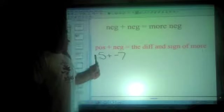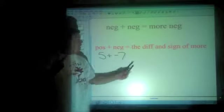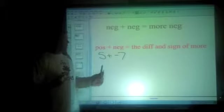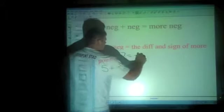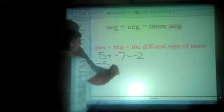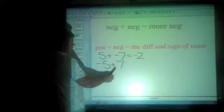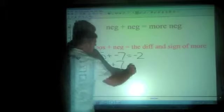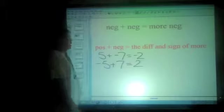So you go ahead and you go 7 minus 5 equals 2. And then the sign of whichever one you have more. We had more negatives, so that would become negative 2. But if it was negative 5 plus 7, we'd still go 7 minus 5 is 2. But this time there's more positives than there are negatives, so it becomes positive 2.